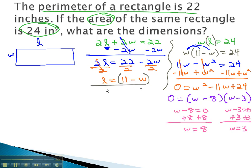We still need to find the length, which we can get from that length equals equation from the perimeter. The length is equal to 11 minus W. If W were 8, that tells me the length would have been 3. Or 11 minus the other width, 3, tells us the length would have been 8.